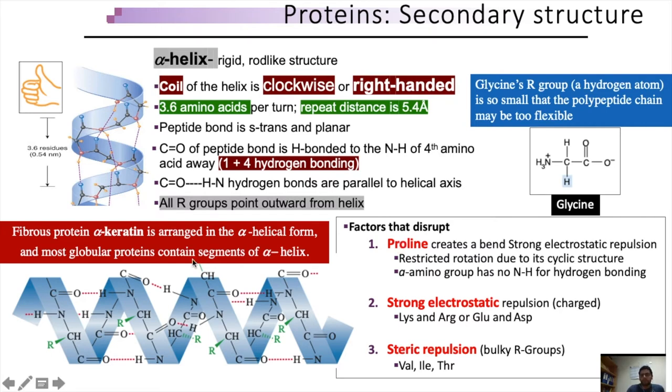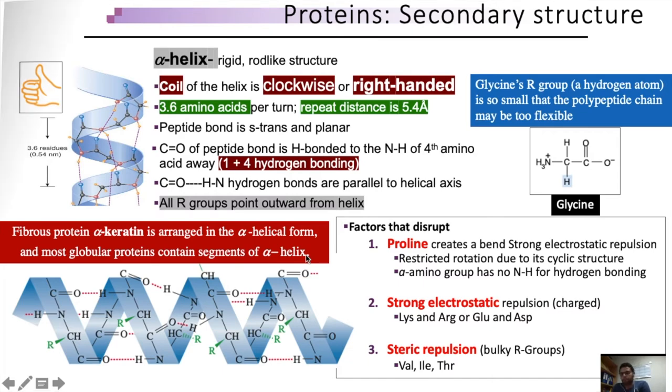Many fibrous proteins such as alpha-keratin are arranged in the alpha helical form, and most globular proteins contain segments of alpha helix.